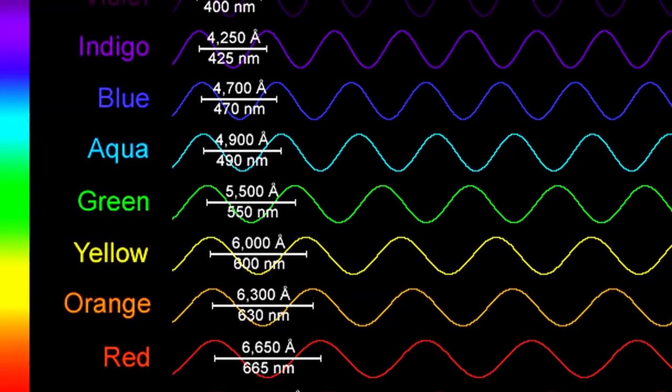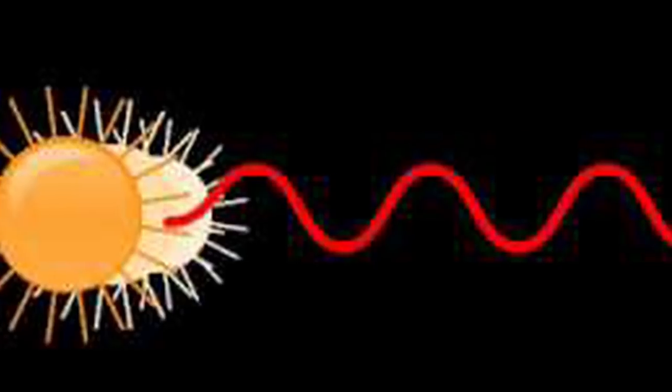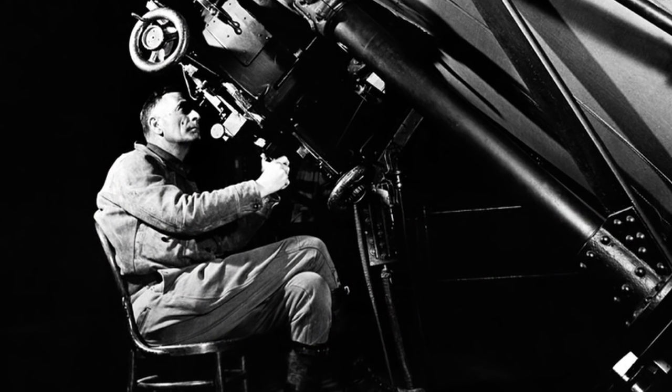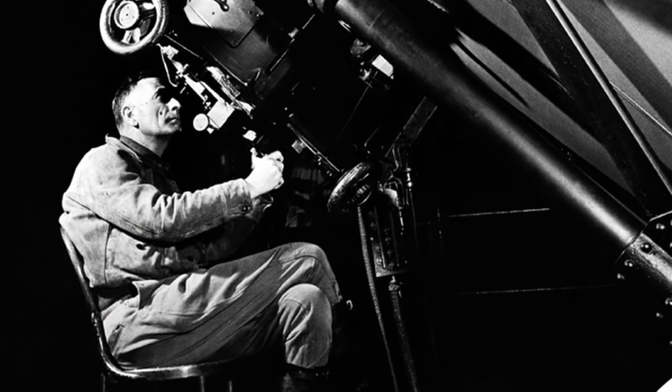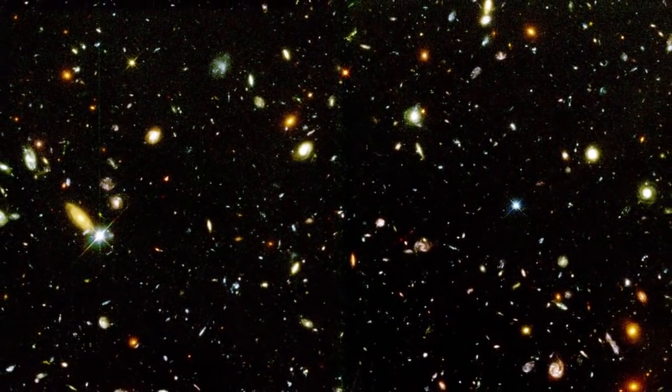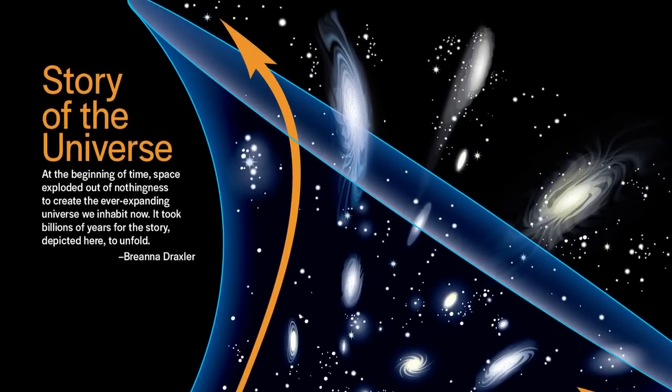Like sound, light also travels in waves. If a source of light is traveling toward you, its wavelengths are compressed, resulting in a lower wavelength, which means the light looks bluer. We call this blue shift. Likewise, when a light source travels away from you, the waves emitted from it are stretched out, resulting in longer wavelengths. This is known as redshift. What Hubble found was that the majority of galaxies are redshifted. What's more, the further away they are, the more redshifted they are. This means that the universe is traveling away from us in all directions and is accelerating the further away it gets.